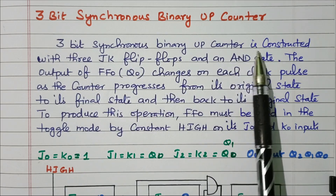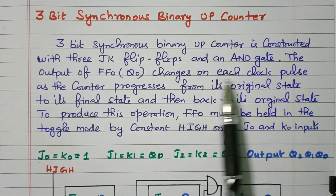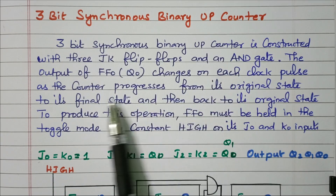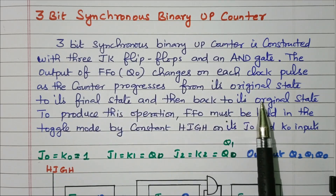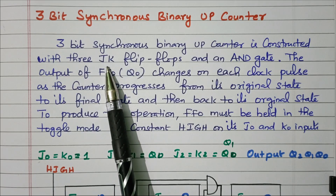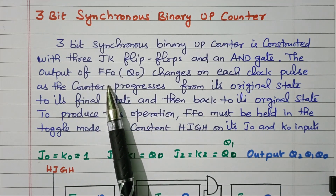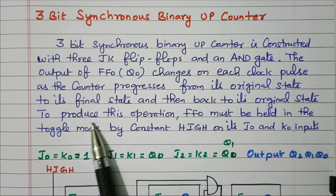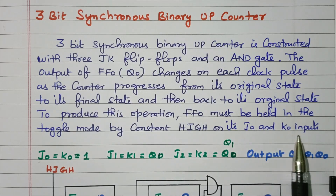A 3-bit synchronous binary up counter is constructed with 3 JK flip-flops and an AND gate. The output of the first flip-flop, Q0, changes on each clock pulse as the counter progresses from its original state to its final state and then back to the original state. The first flip-flop is connected with a high input. In the JK flip-flop, if both inputs are high, the output will toggle. So for the first flip-flop, J and K input is 1, and every clock pulse its state changes. The flip-flop must be held in the toggle mode by a constant high on its J0 and K0 inputs.